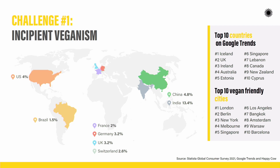Another indicator is Google Trends. For the last year, these were the countries where veganism was most searched — and only two of the top ten countries are in the Global South. The same goes for the top ten most vegan-friendly cities in the world from a Happy Cow report — again, only two of the top ten are in the Global South.